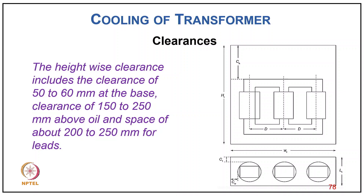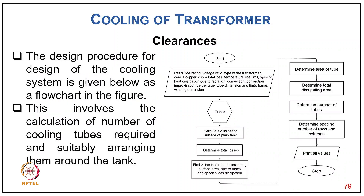The design procedure for the cooling system is given as a flowchart. Steps include: input transformer design data and specifications; calculate tank surface area; determine losses; find X for required increased surface area; determine tube area; determine total surface area; determine number of tubes; determine spacing, rows and columns; then output and stop.